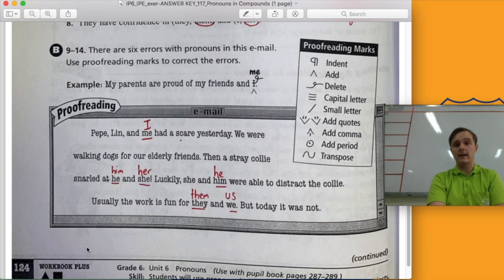Section B, there were six mistakes in the paragraph. We need to find the mistakes and correct them. So Pepe, Lynn and I had a scare yesterday. Change me to I. We were walking dogs for our elderly friends. That pronoun we is correct. You shouldn't have changed it. Then a stray collie snarled at him and her. So we need object pronouns, him and her, not subject pronouns, he and she. Luckily, she and he were able to distract the collie. We changed him to he. Usually, the word is fun for them and us. We changed they and we to object pronouns, them and us. But today it was not. So give yourselves a score out of six for section B and a total out of 14.